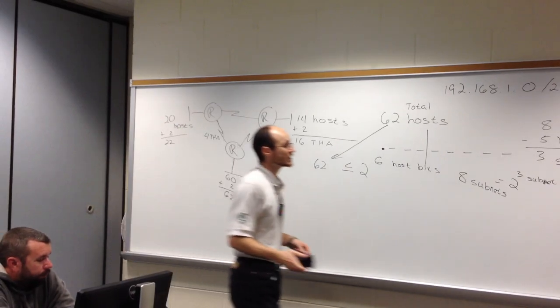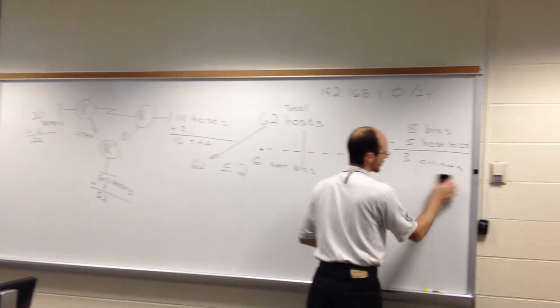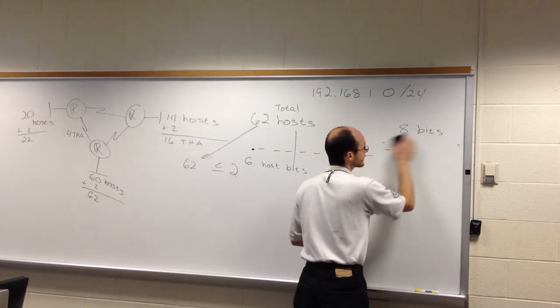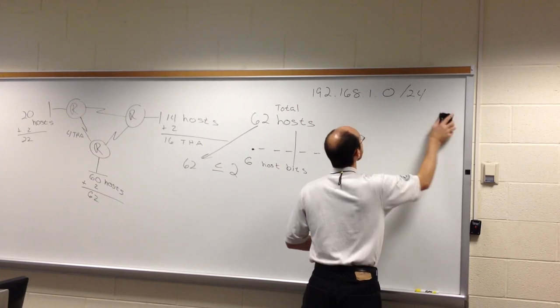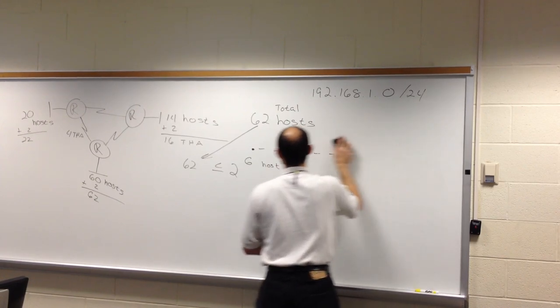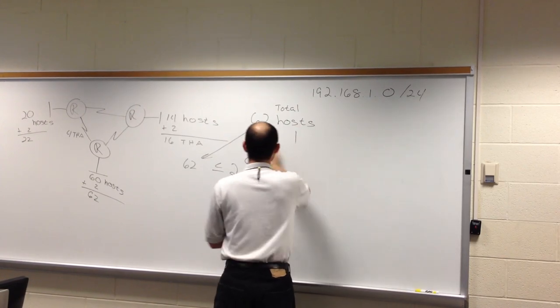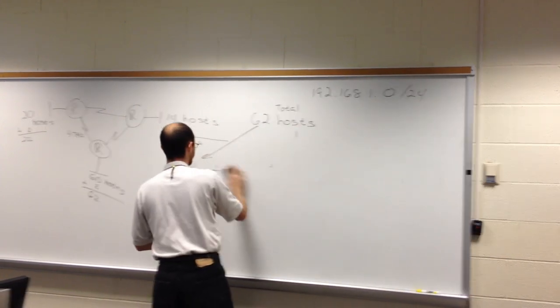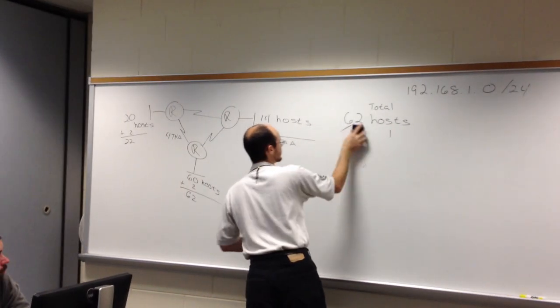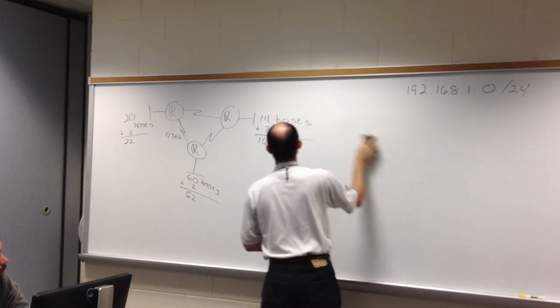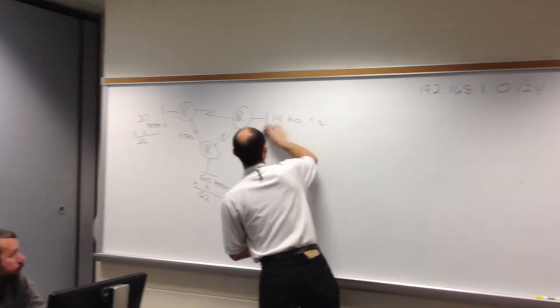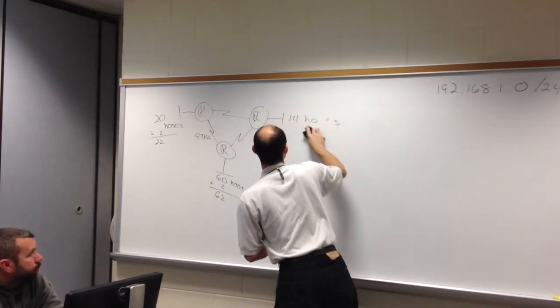VLSM stands for Variable Length Subnet Mask. The V stands for variable, L for length, S and M for subnet mask. We're going to vary the subnet mask to accommodate our problem.